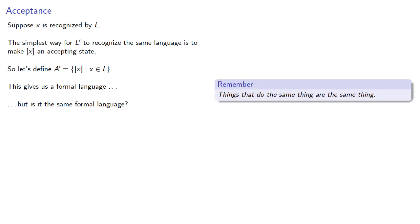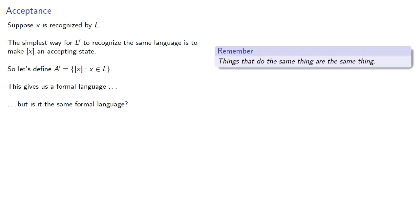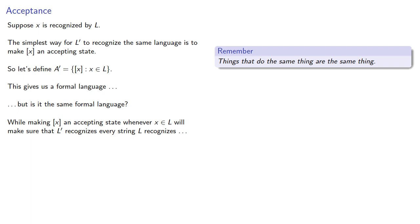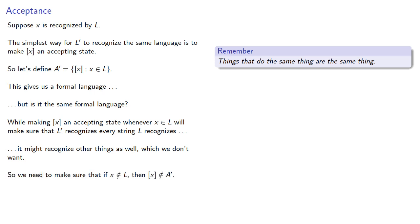Remember, things that do the same thing are the same thing. While making the equivalence class of x an accepting state whenever x is in our language will make sure that L' recognizes every string L recognizes, it might recognize other things as well, which we don't want. So we need to make sure that if x is not in our language, the equivalence class of x is not one of our accepting states.